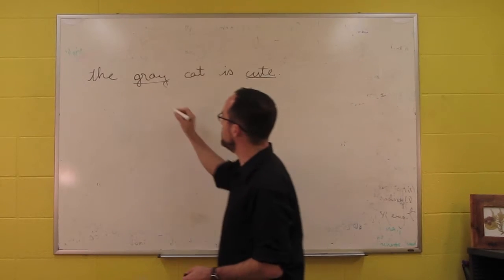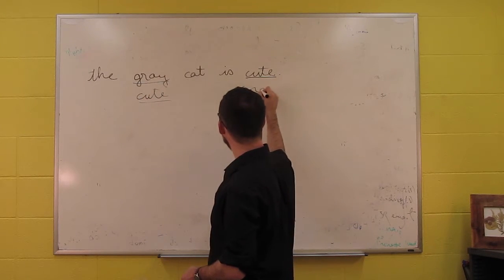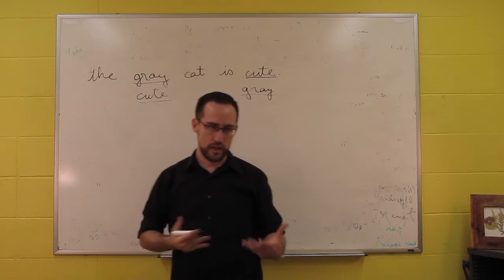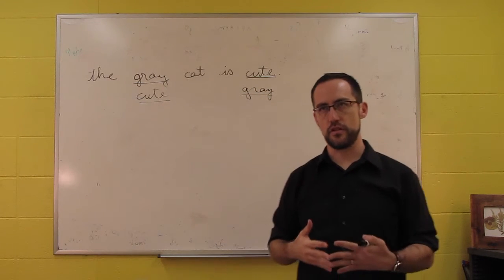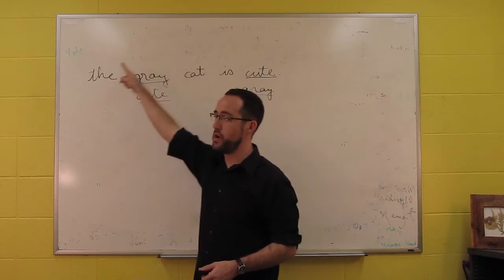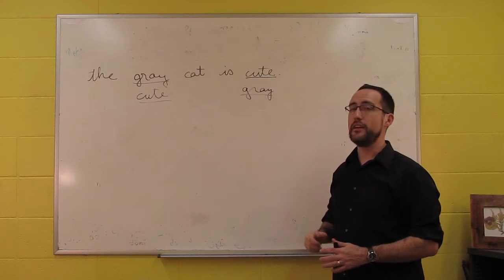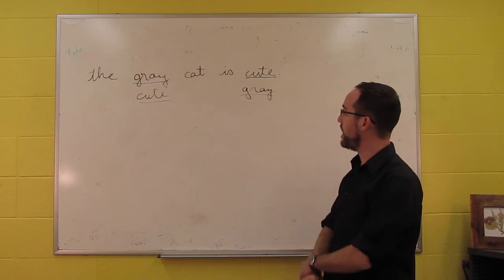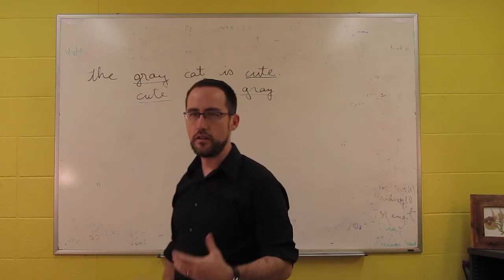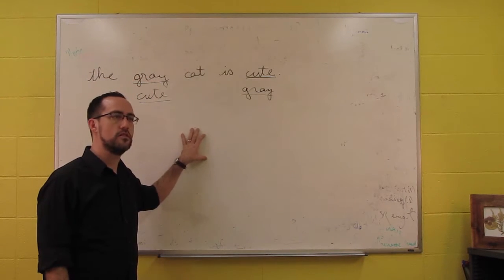And if we switch these and we say the cute cat is gray, then we get a different use. Now cute is being used attributively, so it's helping us figure out what cat we're talking about. And then gray is now the predicate and what we're saying about that cat. So we have a predicative use and an attributive use, and we find that modifiers are used that way.